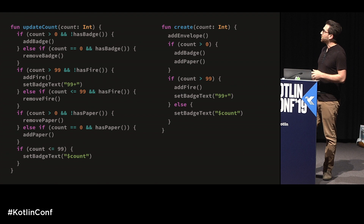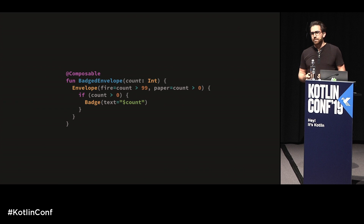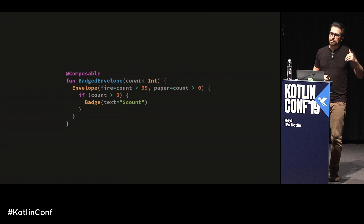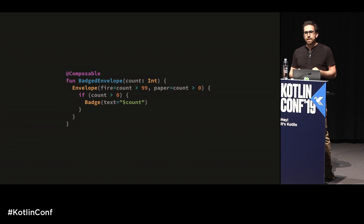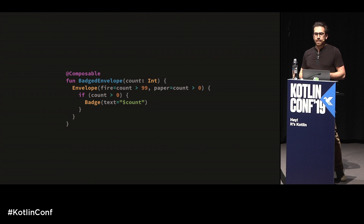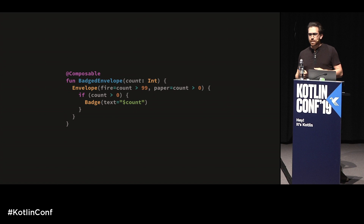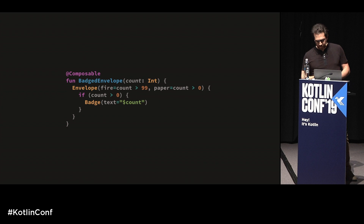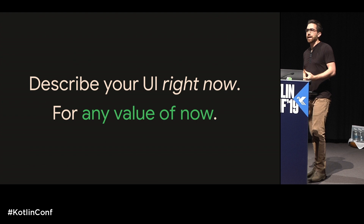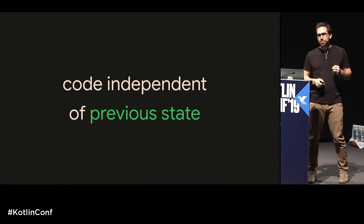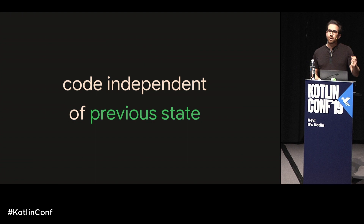Doing the same thing in a declarative system looks quite different. You still have a function receiving a new count, but the key difference is that you aren't looking at the current state of the UI. All you're saying is: given this count, here's what I want. Show an envelope; if count is greater than 99, show fire; if count is greater than zero, show paper with a badge. The name of the game with a declarative UI system is to describe what your UI should look like right now — for any value of now — writing code that's independent of the previous state.